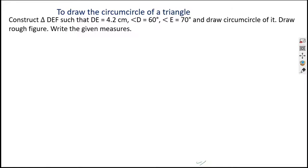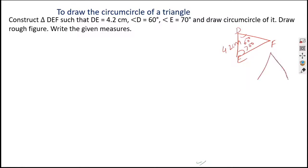For the circumcircle construction, we need to draw triangle DEF. DE = 4.2 cm, angle D = 60°, and angle E = 70°. This is an ASA construction which you have studied. I will redraw this diagram with D, E, F labeled. I am directly drawing this for you without detailed explanation since you already know triangle construction.